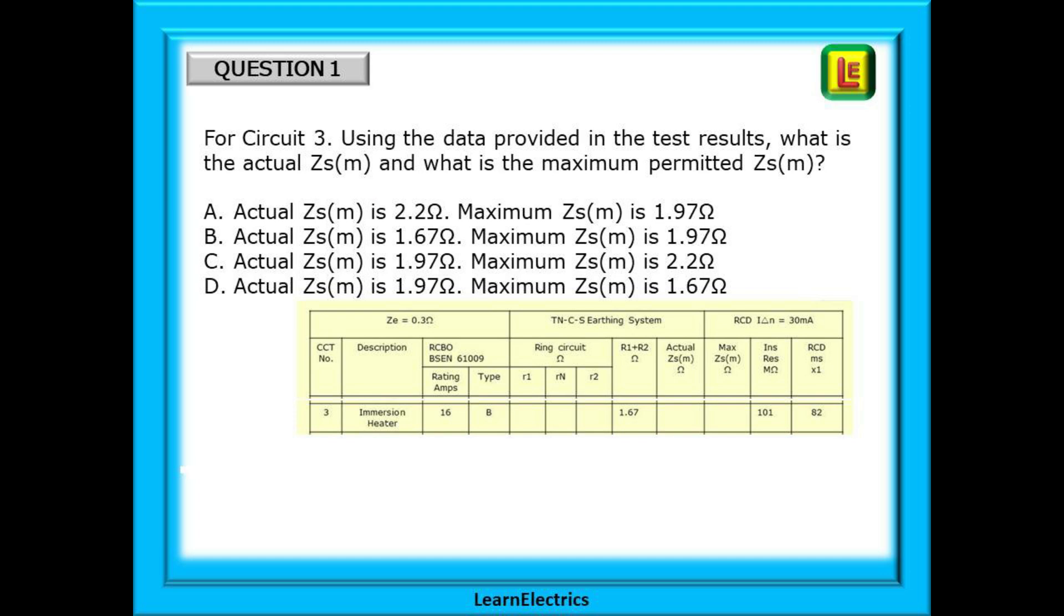Question one asks for circuit number three, using the data provided in the test results, what is the actual ZSM and what is the maximum permitted ZSM. There are four possible answers shown A, B, C or D and you should choose the most appropriate for the question. You will notice the use of ZSM for measured ZS.